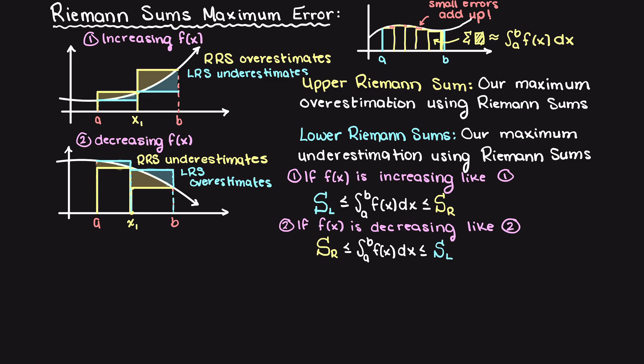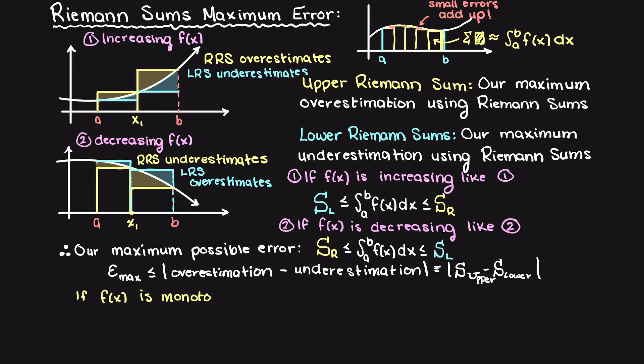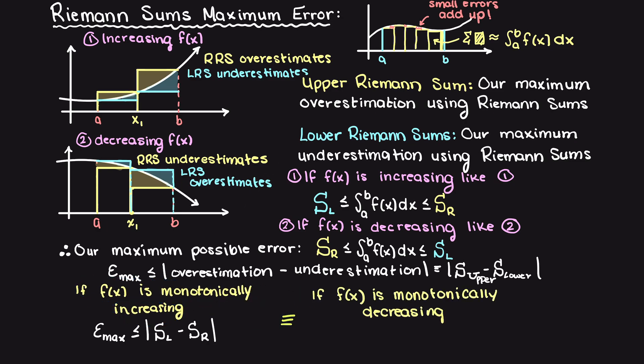Now in numerical methods, we want to know what our maximum possible error for a given numerical technique can be. Therefore, for this method, our maximum possible error is going to be the absolute value of our overestimation minus our underestimation. The absolute value just ensures that only our magnitude of the difference between these two values is going to be representing our error, meaning we get the correct answer if our function is both increasing or decreasing.